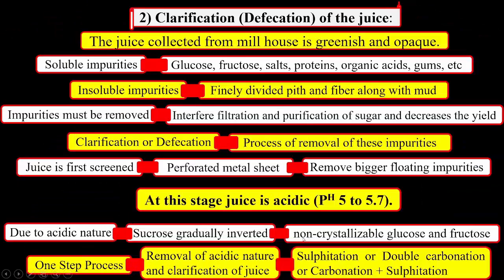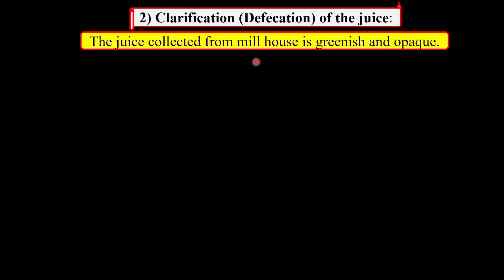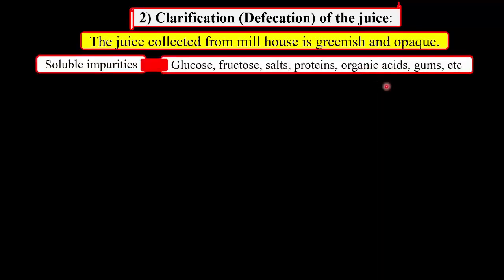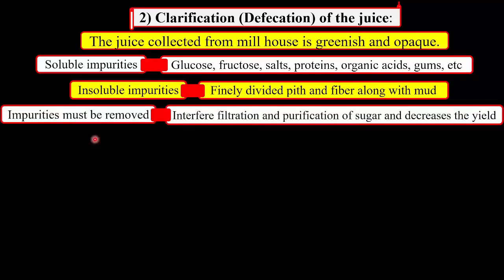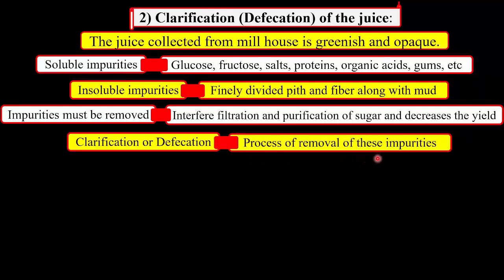Now we have seen the second step of the manufacture of white sugar, that is clarification or depuration of the juice. The juice collected from the millhouse is greenish and opaque. This opaque appearance of the juice is due to the presence of some soluble impurities like glucose, fructose, salts, proteins, organic acids, phosphoric acid, gums, etc., and insoluble impurities like finely divided pith and fiber along with mud. Before concentration, these impurities must be removed; otherwise they interfere with filtration and purification of the sugar and decrease the yield. The process of removal of these impurities from the juice is called clarification or depuration.